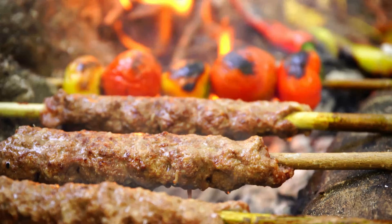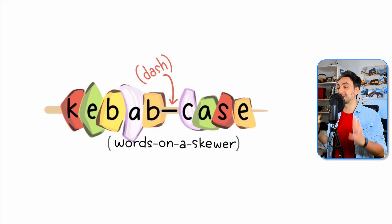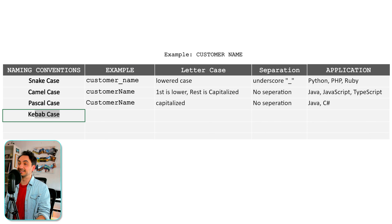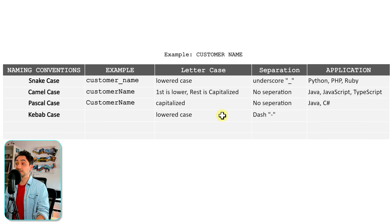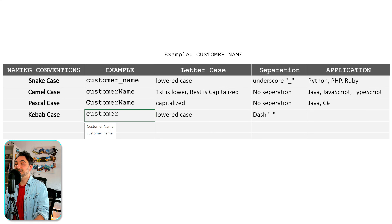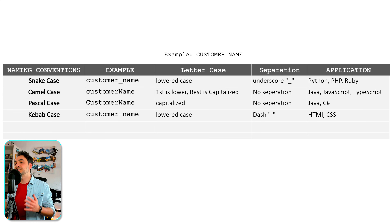The next naming convention is kebab case. All words are lowercase and separated with dashes, so the name looks like a delicious hot kebab skewer. The rule: letter case is lowercase, and the separator is the dash. Applying those rules to 'customer name' gives us: customer-name. If you are a web developer or designer, you likely know this convention, because it is widely used in HTML and CSS. Like snake case, it's really easy to follow.